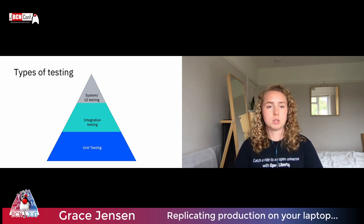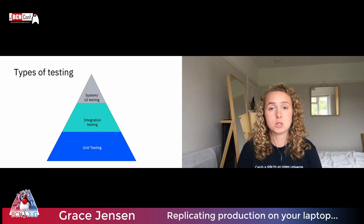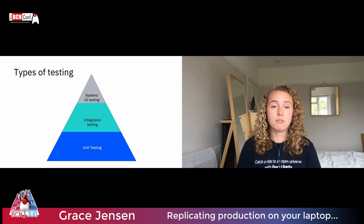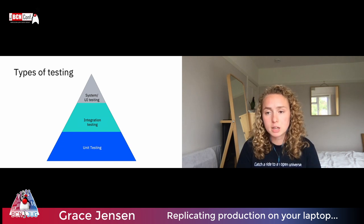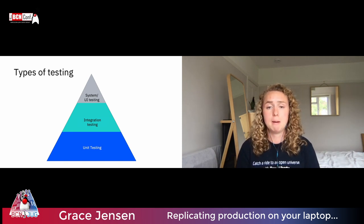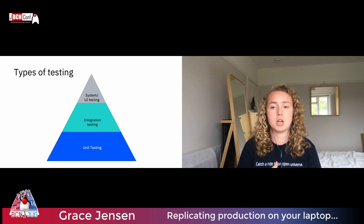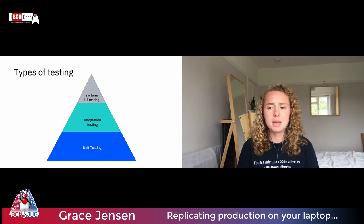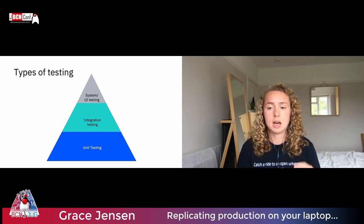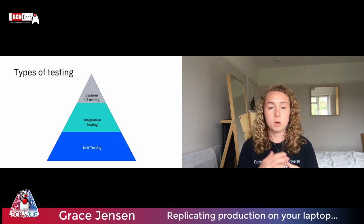Then we have system, UI, or end-to-end testing — testing your application completely as it would be in production. This takes even more resources, time and effort, so we want fewer of these, hence why it's at the top of the pyramid. Most applications benefit from a balanced mix of these types of automated tests to capture the various different kinds of errors that might creep into our systems. The amount of each type should roughly follow this pyramid shape — the bulk being unit tests at the bottom, getting larger but fewer as you move up.